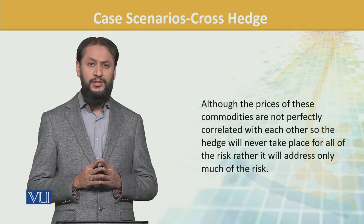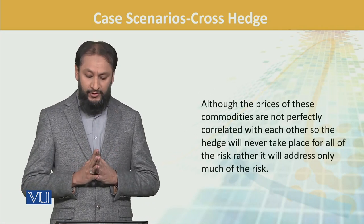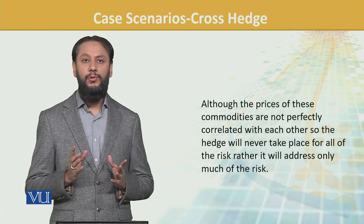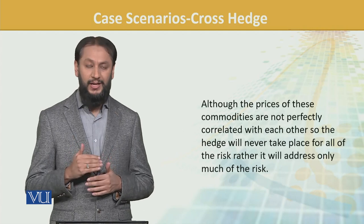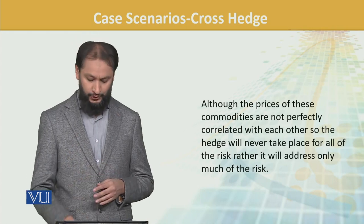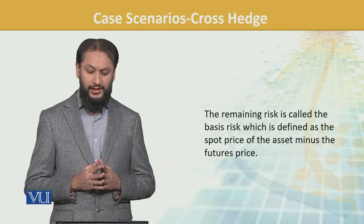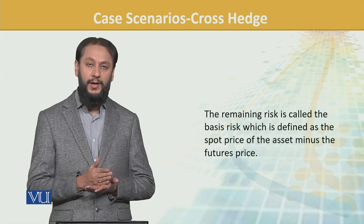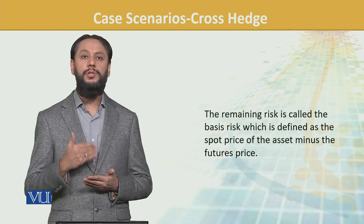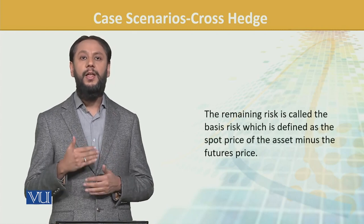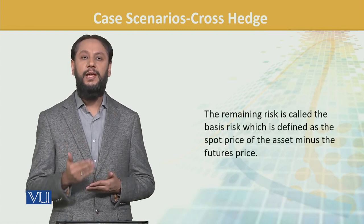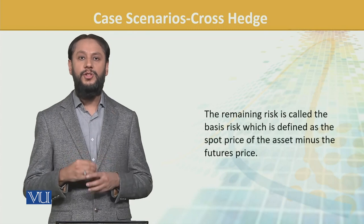Although the prices of these commodities are not perfectly correlated with each other, the hedge will never eliminate all risk — some risk will remain. However, the major part of the risk will be captured through this cross hedge. The remaining risk is called the basis risk, which is defined as the spot price minus the futures price. This difference still remains and sometimes we accept or take on that residual risk while the major part is covered.